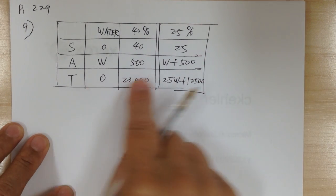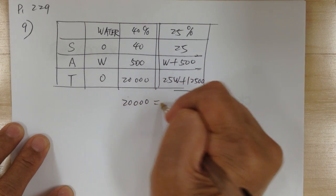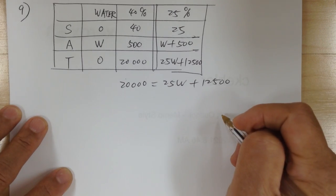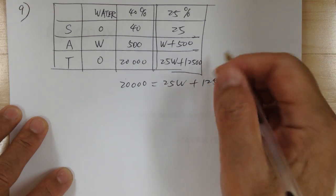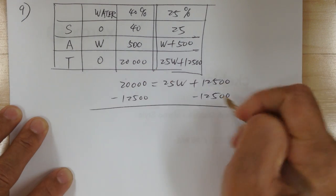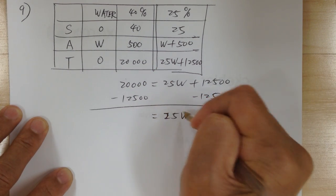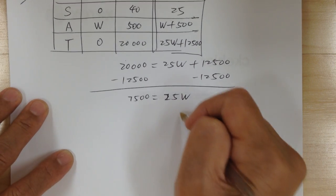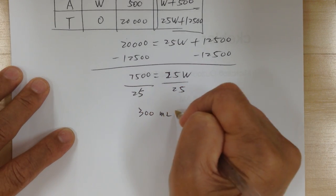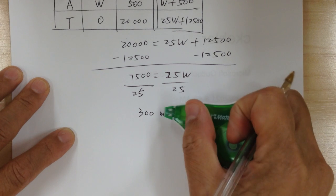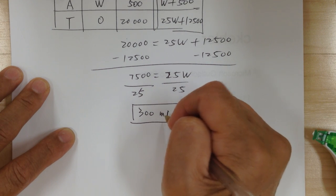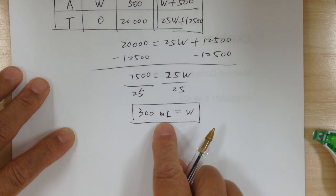Here's your equation. Since zero doesn't do anything, you just have 20,000 equals 25W plus 12,500. The variable is already by itself, so move the number over: minus 12,500 on both sides. So 25W equals 7,500. Divide by 25, divide by 25. So it would be 300 milliliters — water would be 300 milliliters. Don't assume anything; read and do exactly what it says. Zero times W is zero — anything times zero is zero, so that makes the equation really easy.